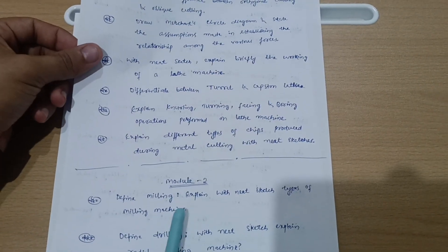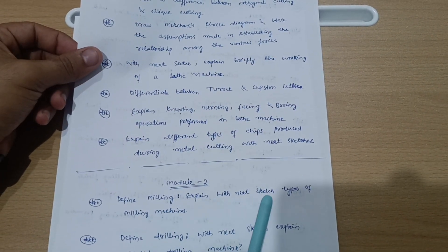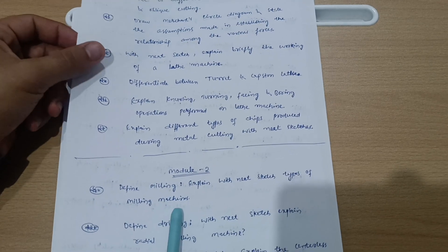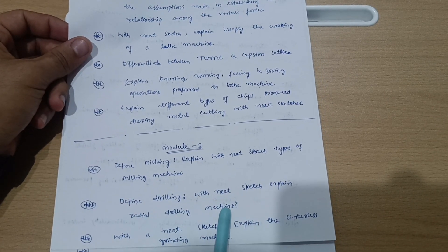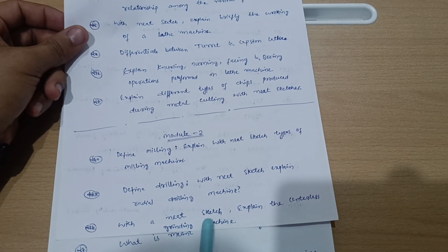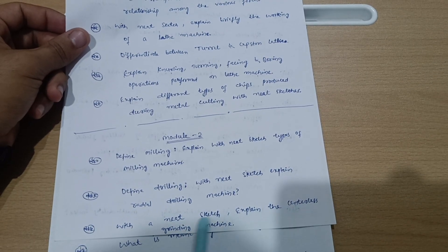Next is Module 2. Define milling. Explain with neat sketch types of milling machines. Define drilling. With neat sketch, explain radial drilling machine with a neat sketch. Explain the centerless grinding machine.